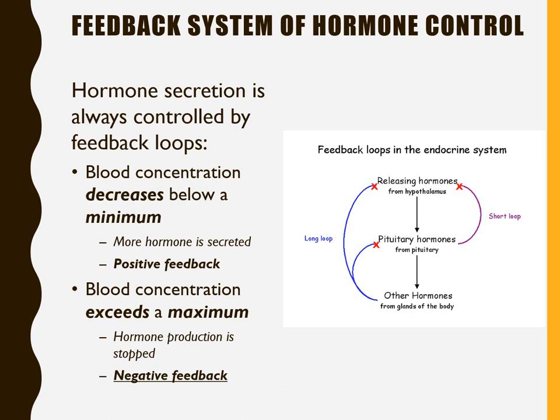If we have too much of the hormone, nutrient, or ion and it exceeds a maximum level, we have a negative feedback loop where the hormone or ion itself tells that gland to stop production — we have plenty circulating in the blood and don't need any more. This negative feedback loop is a very common way to control hormones in the body, though these loops can also have problems related to endocrine disorders.